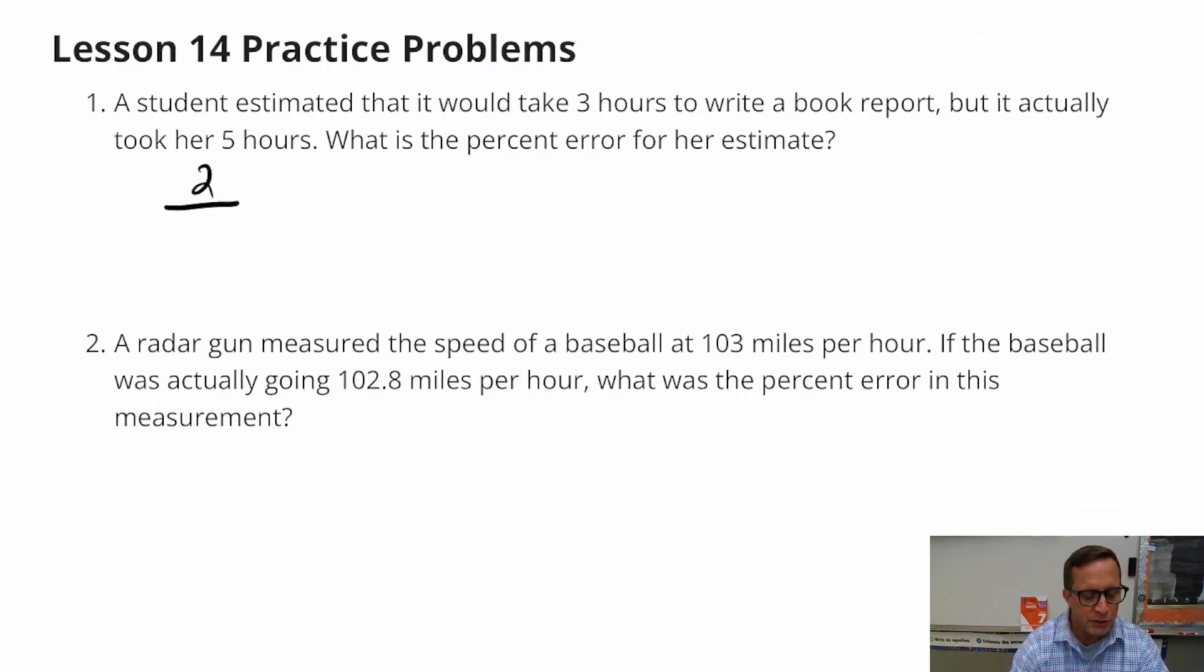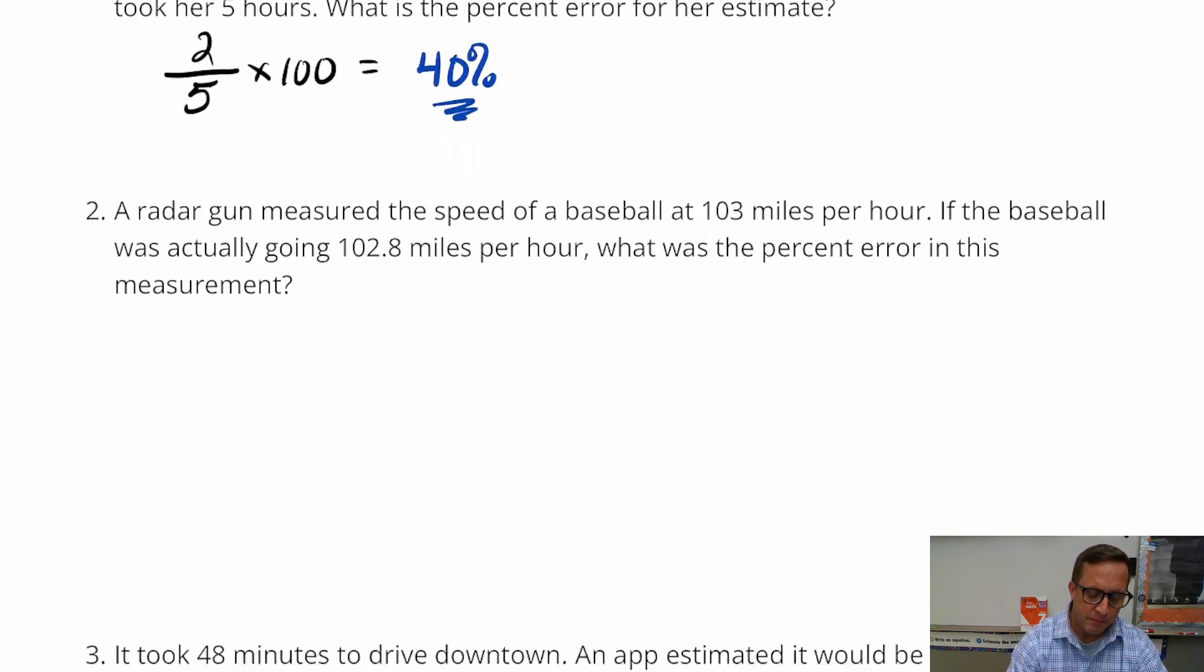And then we're going to want to put that over, now the tricky part for this is, what do we put that over? Is that going to be three or is it going to be five? But remember, the bottom number is the actual value. And it doesn't do this every time, but this is pretty convenient that it says it actually took her five hours. So that was the actual time it took her. So you're going to do two divided by five times 100. The percent of error on that one is 40%.